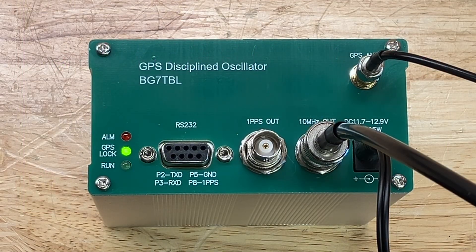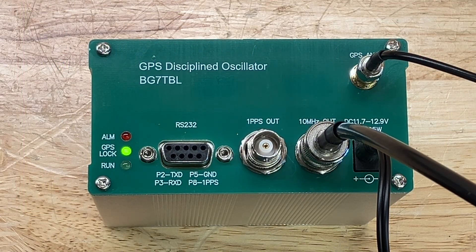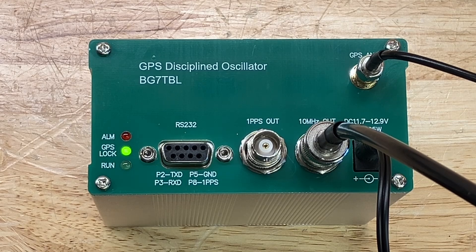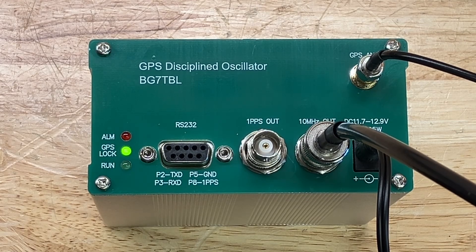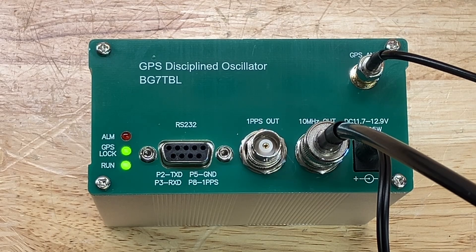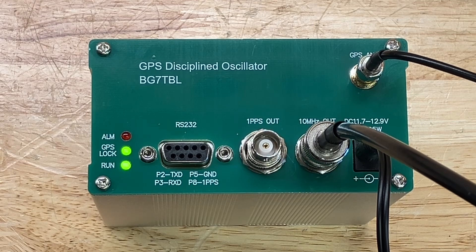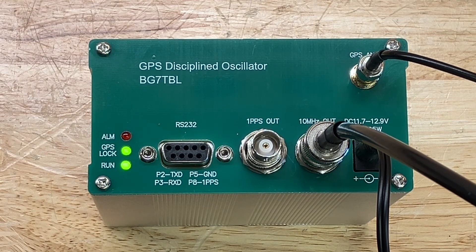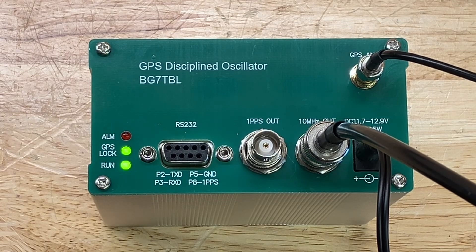Okay. So after only a few minutes, the alarm light has turned off. GPS lock light is still solid and the run light is still flashing. I'm assuming that all of these indications are normal and that the unit is functioning properly. Let's take another look at the frequency counter and see what it looks like now.